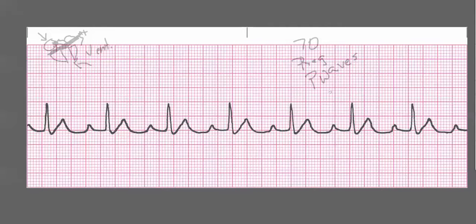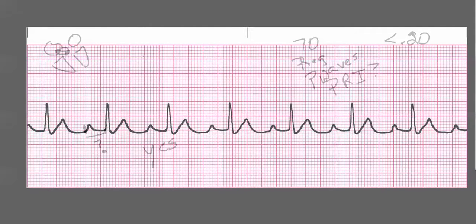What happens when you look at the PR interval? Remember, the PR interval needs to be less than 0.20. If you look at this picture and find one that marches out — here's a good one — here's the onset and here is where that PR interval ends. Is that space greater than 0.20? If you answered yes, then you are correct.